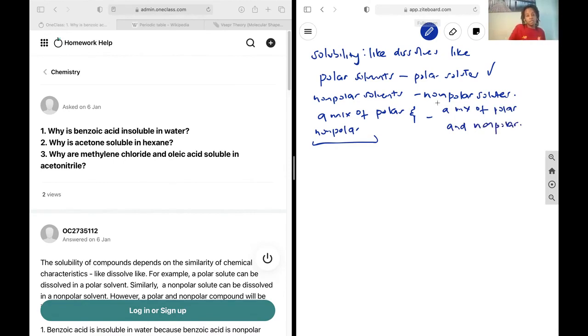And so let's begin examining our cases. For the first case, we have benzoic acid. Benzoic acid is non-polar, and we're trying the solvent of water, and water is polar. So because these two are not alike, it's not going to dissolve, and so it makes sense that benzoic acid is insoluble in water.